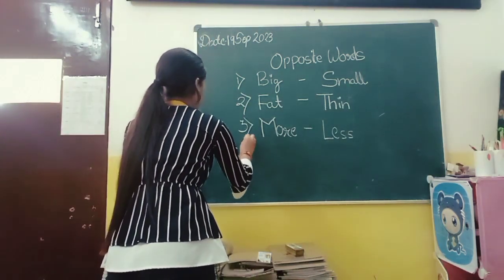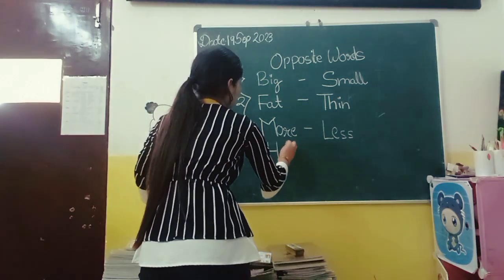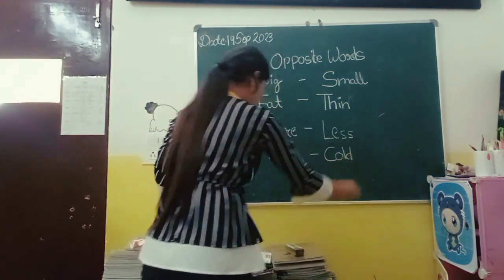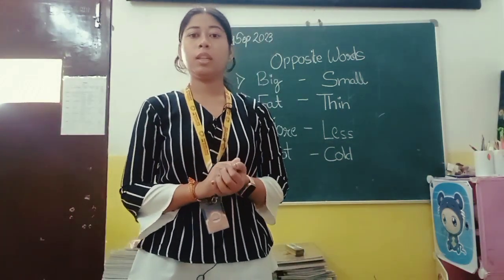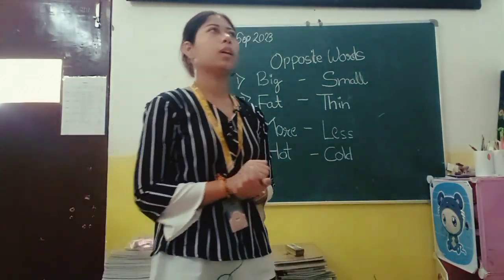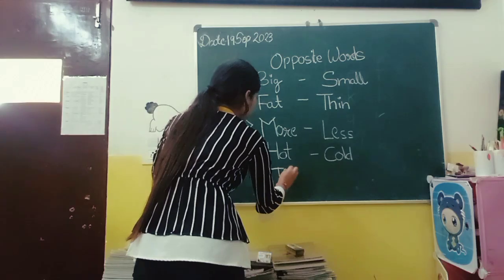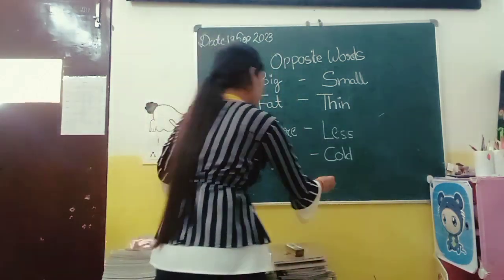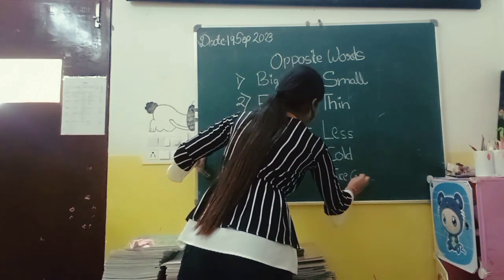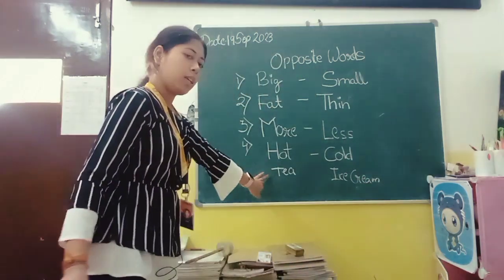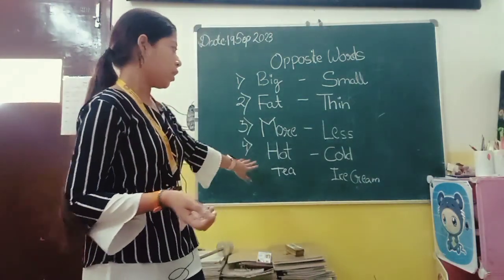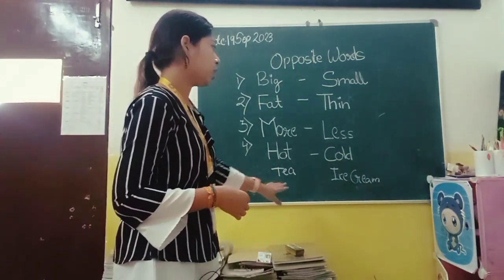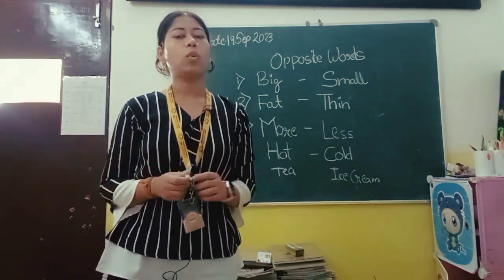Now the next word is 'hot' and the opposite word of hot is 'cold'. Hot means garam and cold means thanda. For example, tea is hot. An example of cold is ice cream. When we drink tea, it is hot. And when we have ice cream, it is cold. So hot means garam and cold means thanda.